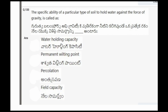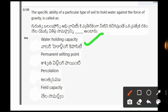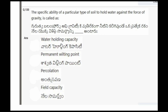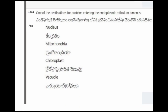Next question: The specific ability of a particular type of soil to hold water against the force of gravity is called? The options are water holding capacity, permanent wilting point, percolation, field capacity. The correct option is the first one, that is water holding capacity.